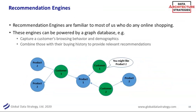Another use case for graph is the recommendation engine. 'Customer bought this — you may also like this.' You can understand the customer's browsing behavior, their demographics, and see that customer one bought a product and customer two also bought the same product. You might then say customer two also bought product two — you might like that as well. It's about traversing the graph to understand the patterns of relationships between different nodes. As I mentioned before, with all of these use cases, data quality, data volumes, and data sets are important. None of this works well if you don't have good data.